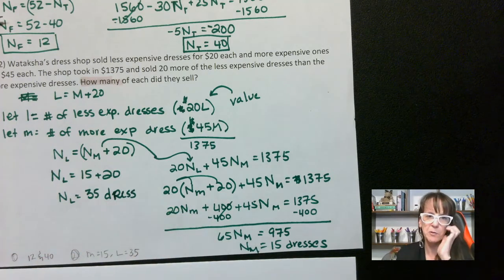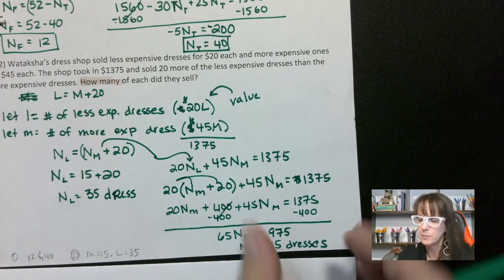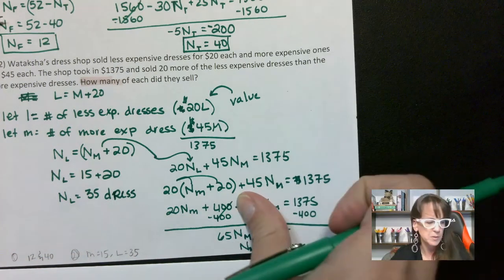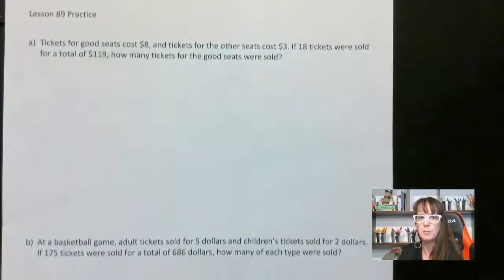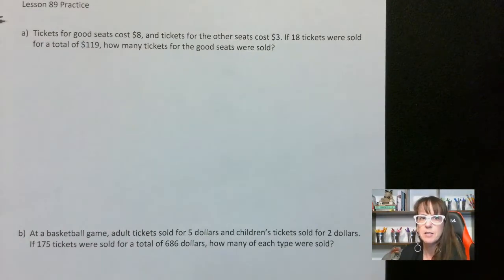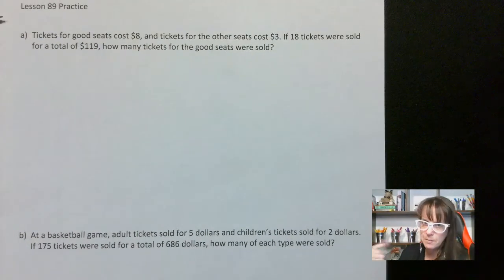We take that information back to our quantity equation: the less expensive dresses equal the more expensive ones plus 20. So the number of less expensive dresses is 35. You should really write a full sentence when doing word problems. So let's do the practice problems. Here are the two practice problems — pause the video, do those, come on back and we'll talk about them.